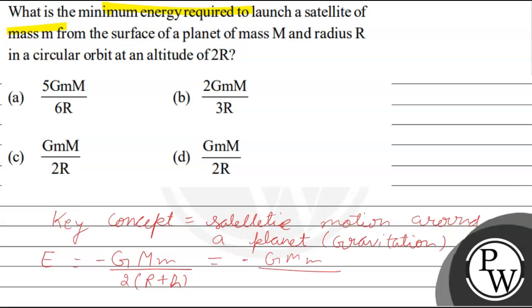So the energy at altitude 2R is minus GMm upon 2 times (R plus 2R). This is minus GMm upon 2 times 3R, which is 3 into 2, giving us minus GMm upon 6R.